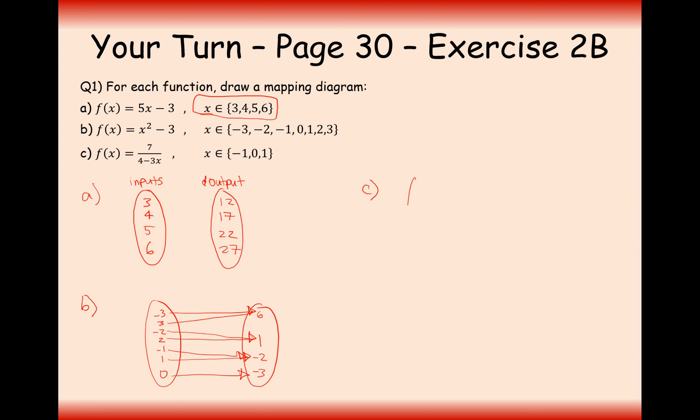Part C is a little bit more tricky in the calculations, so it's going to be minus 1, 0, and 1. 7 over 4 minus 3, let's do 1 first. 4 minus 3 is 1, so that will go to 7. 0 will go to 7 over 4. And 7 over 4 minus 3 times minus 1, that will be plus 3, so that will go to 1. That looks like it's going to be a one-to-one mapping, just for these elements here.